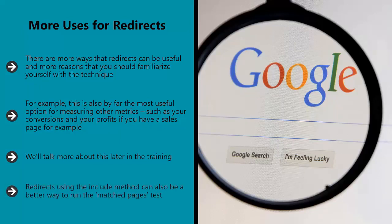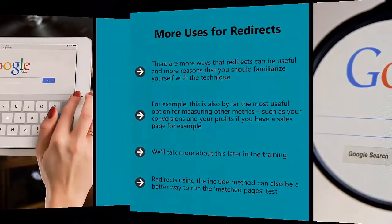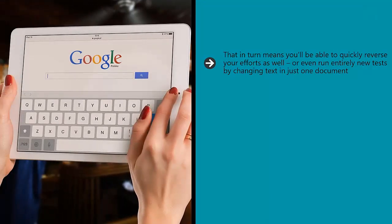Redirects using the include method can also be a better way to run the matched pages test. Rather than manually change half of the pages on your site or a large bunch of pages in your experimental group, you can use the include file in order to make the change once and then insert it into half the pages on your site. That in turn means you'll be able to quickly reverse your efforts as well, or even run entirely new tests by changing text in just one document. Finally, a redirect can be a useful way of testing changes using the previous method, but without permanently altering your site.